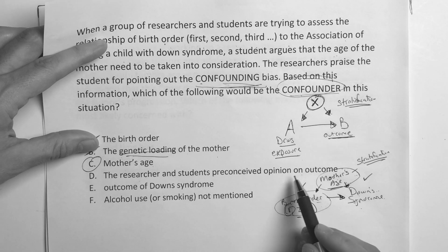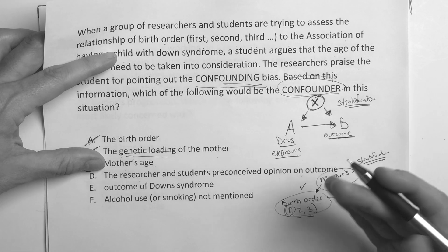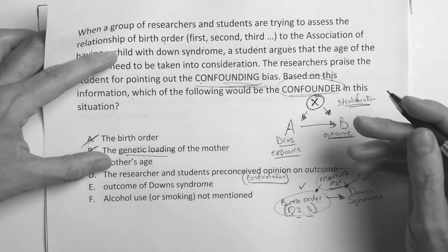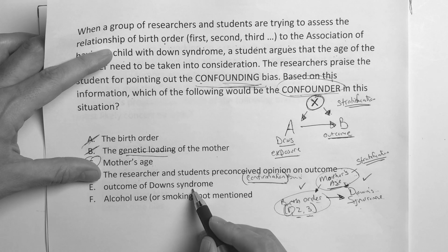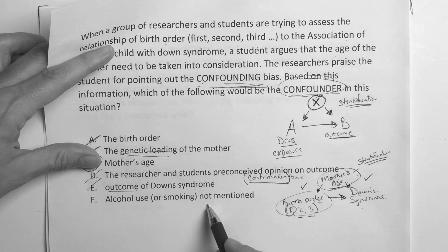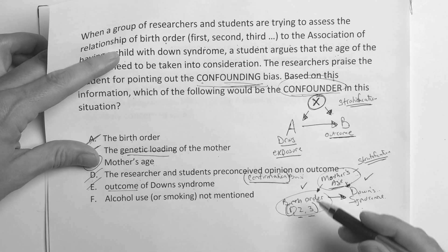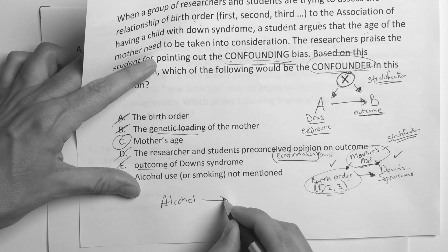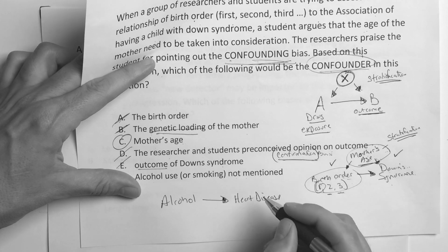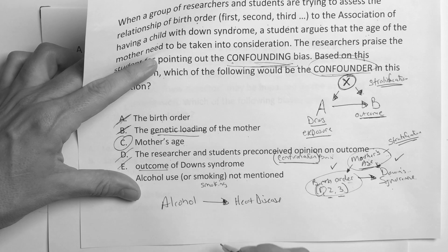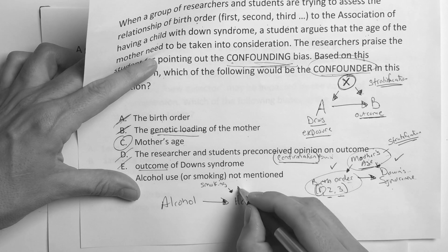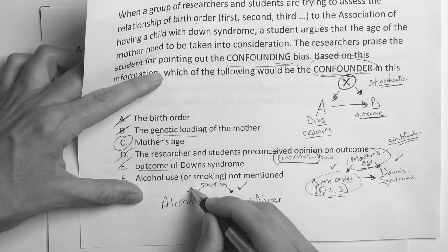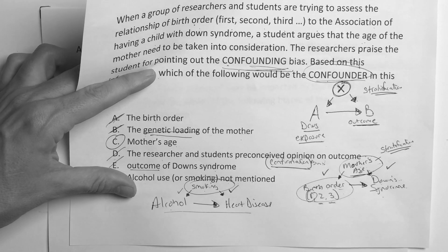The researcher and the student's preconceived opinion on the outcome? No. What kind of bias is that? Like when someone already has an opinion about it? That's a confirmation bias. That's like, I'm going to do my own research on this. I know I'm going to get this outcome before I even start. That's a confirmation bias. The outcome of Down syndrome? No, that's just also known as the outcome. And then alcohol use or smoking that weren't mentioned? Well, they weren't mentioned, so I can't really say that. But that's another example. You could say they do a study where they say, I'm going to study whether alcohol is associated with heart disease. And then the student would say, well, wait a second. What about smoking in this? We've got to take an account for smoking. Because is smoking associated with heart disease? Probably. Is smoking associated with alcohol? Well, if someone drinks alcohol, chances are they may smoke as well. So it's associated with both. So what's the confounder in this study? Smoking. How do I reduce it? Stratification.